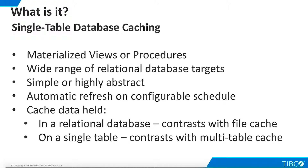File-based caching is generally appropriate for development, but is seldom used in production because it cannot leverage important features provided by relational databases, such as indexing. In addition, single-table caching stores cache data in one relational table. This contrasts with multi-table caching, which uses a group of tables in round-robin fashion when the cache is refreshed. Multi-table caching can be useful when indexing is heavily used, because it reduces the time needed for index maintenance as expired data is deleted. However, multi-table caching is slightly more complex to set up and administer.